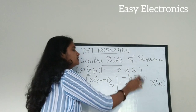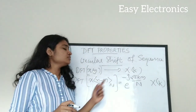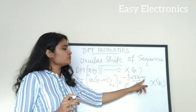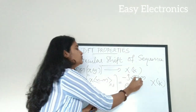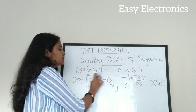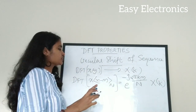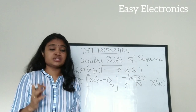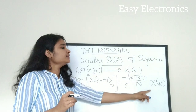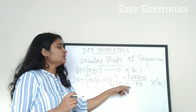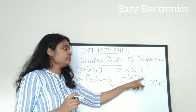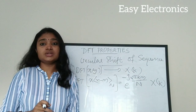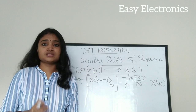The exponential term in the result is similar to that in the DFT equation, but with m in place of n, since m is the number of points by which the original sequence is shifted. The resultant DFT contains an exponential term with m multiplied by the original DFT X(k). This is how the circular shift of sequence property is explained.